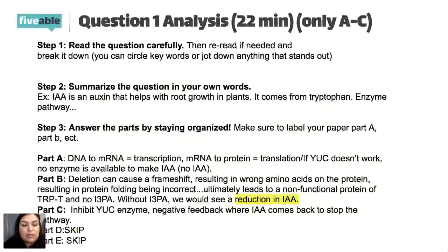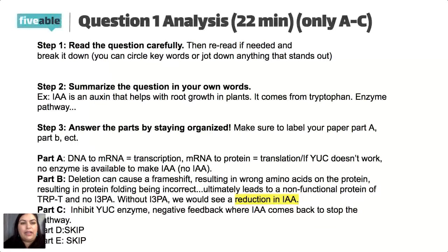Part C: explain one feedback mechanism by which a cell could prevent production of too much IAA without limiting I3PA production. We want to basically stop producing IAA — the very last product — but we don't want to interrupt I3PA. So what could we do to stop the enzyme YUC from converting more I3PA to IAA? We need to inhibit the YUC enzyme. Options include a competitive inhibitor or allosteric inhibition.